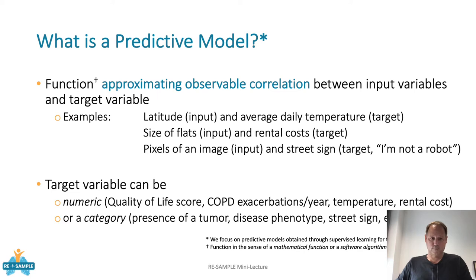This is what the predictive model is actually doing. It is especially important to mention that it is approximating the observations, because it is not simply just returning the specific data on which it has been trained — it generalizes the correlations observed. We will be coming back to this.